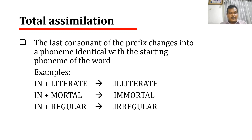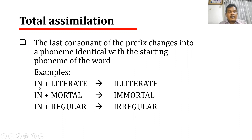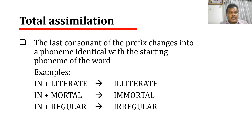The last consonant of the prefix 'in-' is N. When this prefix is followed by another word that begins with L, such as 'literate', the sound N changes into L. In other words, the sound N is assimilated into L, and the assimilation is total because N is changed into L. The result is gemination.